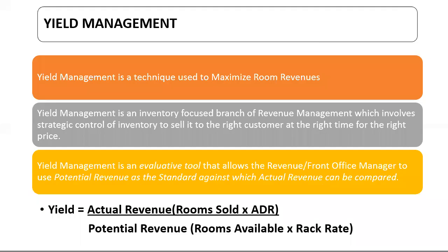What is yield? Yield simply means revenue made. Yield can also be considered a synonym for revenue management, simply resumed as the dynamic pricing, overbooking and allocation of perishable assets to maximize revenue. Perishable assets here, which is in the front office department, are rooms.